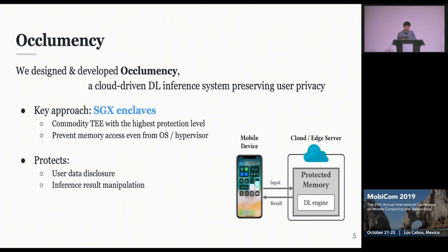Occlumency is a system which preserves the user's privacy based on cloud-driven deep learning inference. Our key approach is utilizing SGX enclaves. SGX is one of the commodity trusted execution environment techniques which provides the highest protection level. It can prevent memory access even from the operating system or hypervisor. By using SGX enclaves, our system can protect two things: user data disclosure, and inference results manipulation.